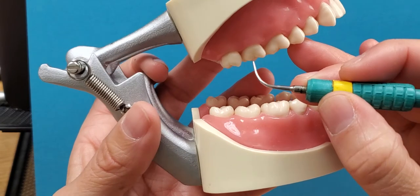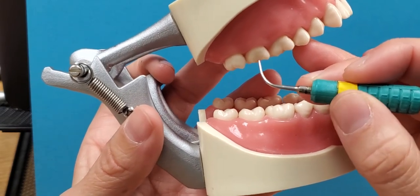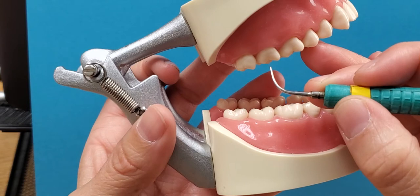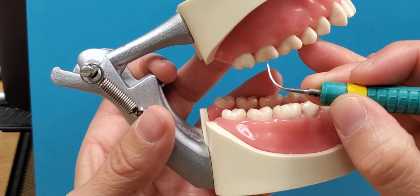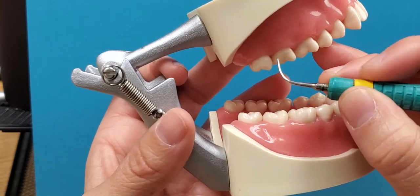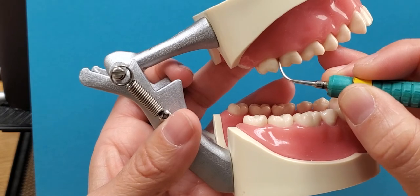All of your basic instrumentation rules apply to this technique, so you still want to have the modified pen grasp, you want to have a fulcrum intraoral one to four teeth away, and you're going to position the instrument just like you would a probe.